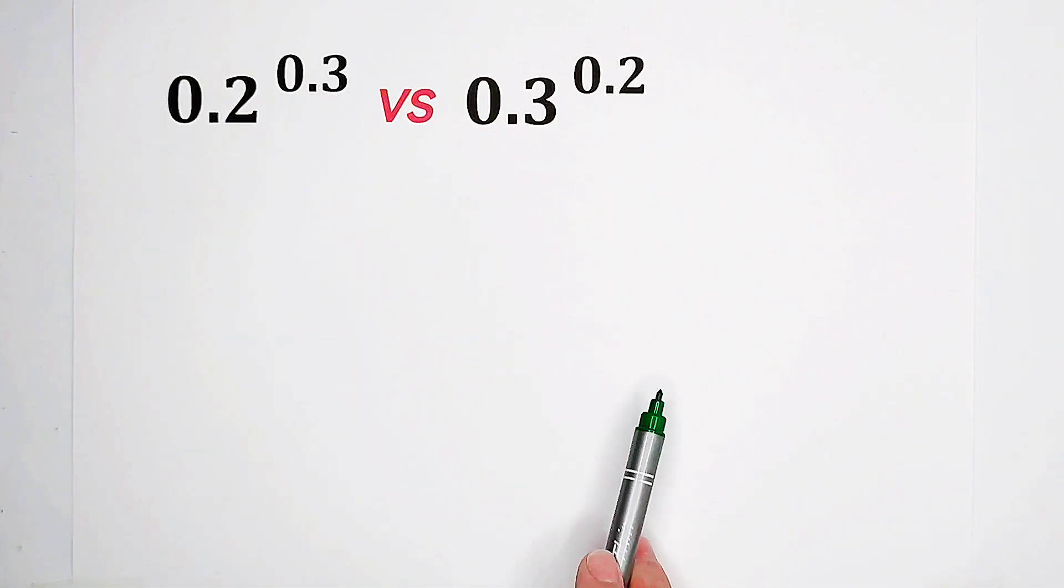Numbers between 0 and 1, how should I compare them? I have a trick. A trick that most people are not able to figure out.